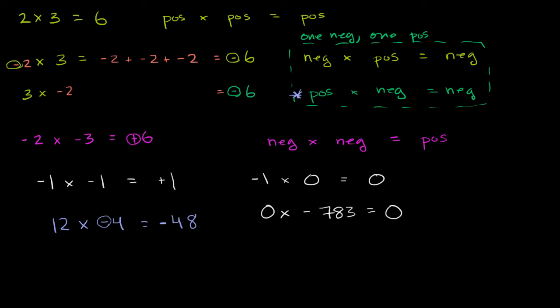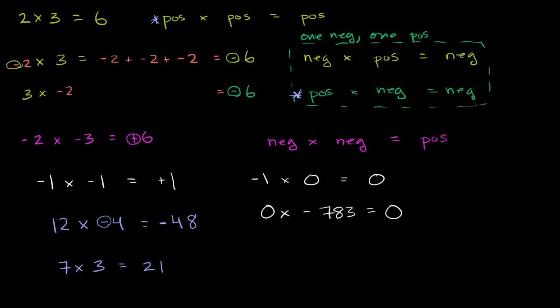Let's do another one. What is 7 times 3? Well, this is a bit of a trick — there are no negative numbers here. This is just positive 7 times positive 3, the first circumstance, which you already knew how to do before this video. This would just be equal to 21.